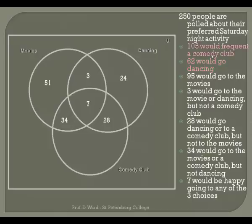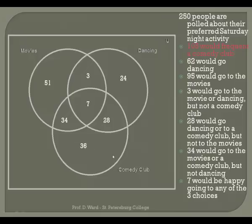A hundred-five would frequent a comedy club — that's the entire circle. I need just the moon-shaped part: people who would prefer a comedy club but not the movies and not dancing. So I subtract away those three numbers (34, 28, and 7), and I get thirty-six people.